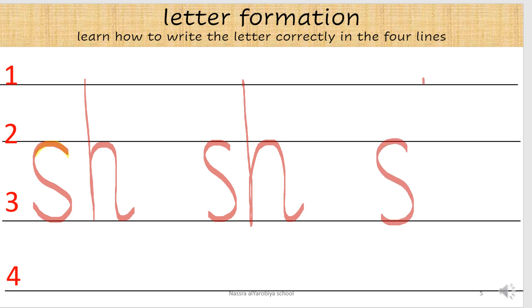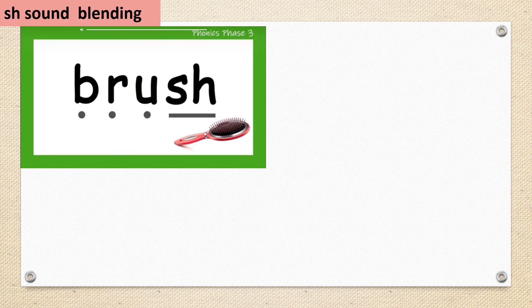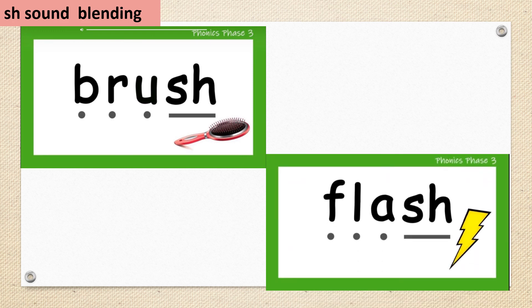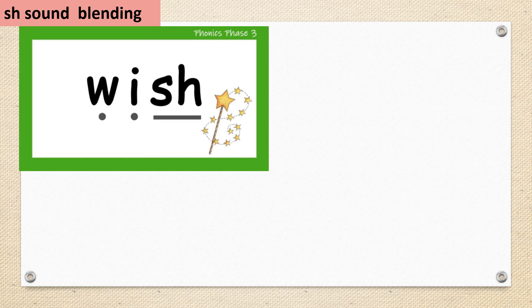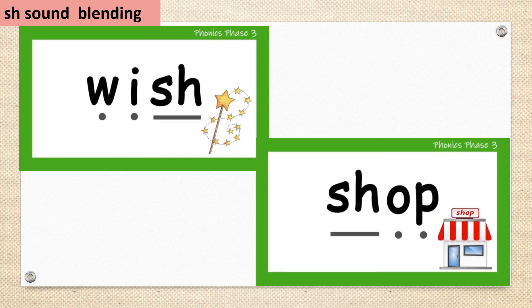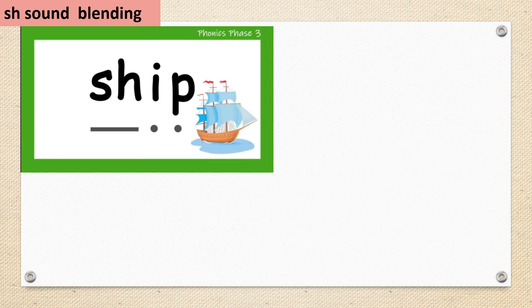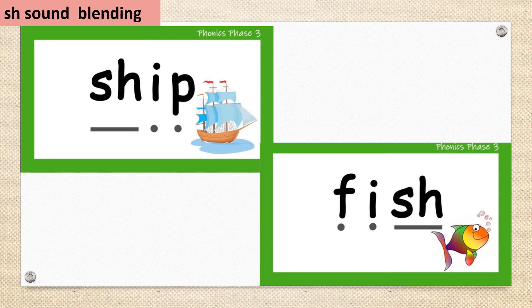Shhh. You write it like this. Well done! Now my rocket readers, let's blend some words. Are you ready? Try to read fast: brush, brush, flash, flash, we wish, shop, shop, it, ship, fish, fish.